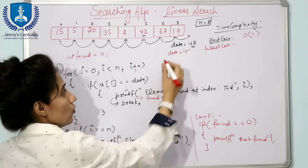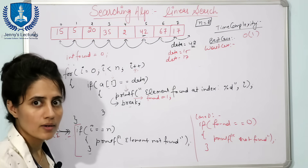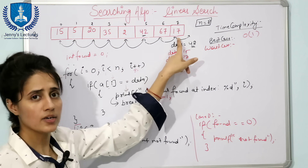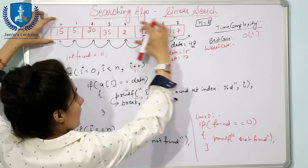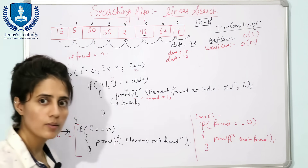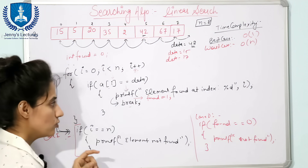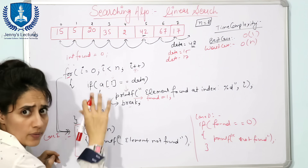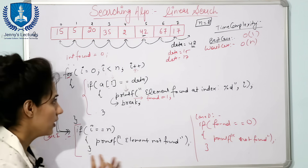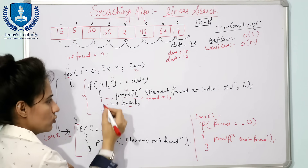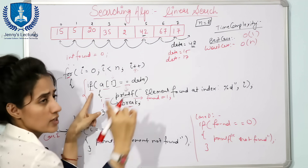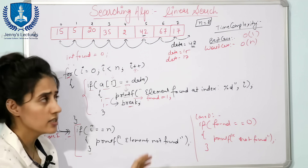Worst case: suppose you want to find data = 17, which is the last element. Comparisons: 15, 5, 20, 35, 42, 67, then 17 — that's n = 8 comparisons. So the worst case time complexity is O(n). To find time complexity: locate the loop in the program, find how many times the statements inside execute — that's your time complexity. Here the if statement executes at most n times, so worst case is O(n).